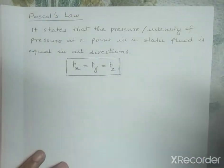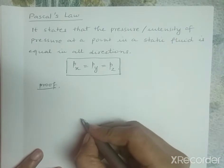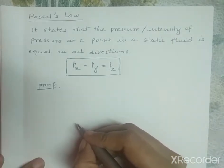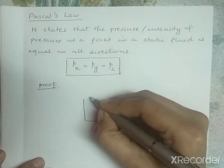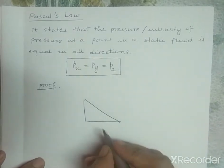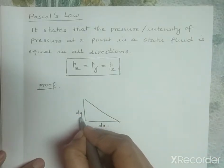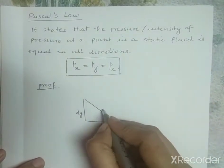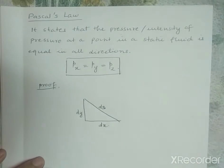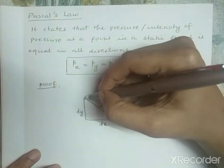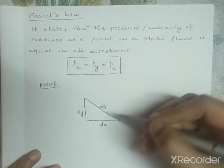To prove this statement, I am taking an arbitrary fluid element of wedge shape. This side is along the x direction, so I am naming it dx. This side is along the y direction, so it is dy. This side is along the xy plane, and I am naming it ds.